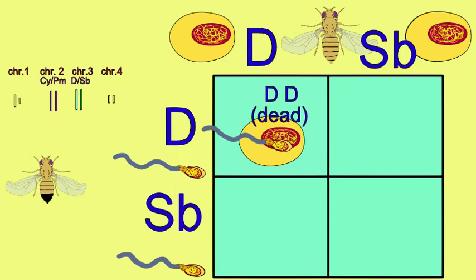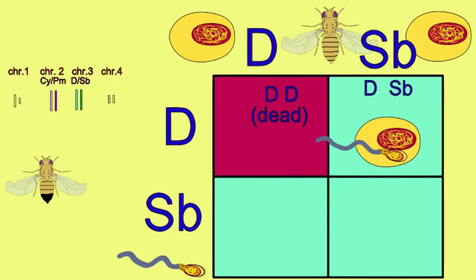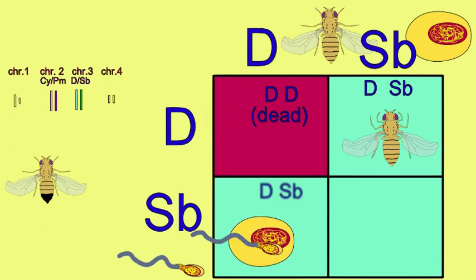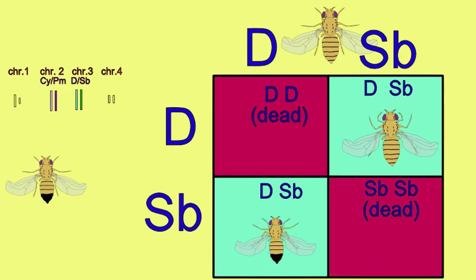Embryos which receive copies of the chromosome 3 with dicete from both parents will perish because this is homozygous lethal. Embryos which receive a copy of stubble from both parents will perish because this mutation is homozygous lethal.